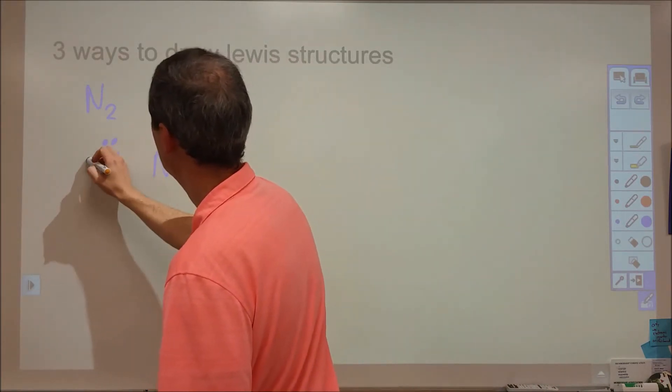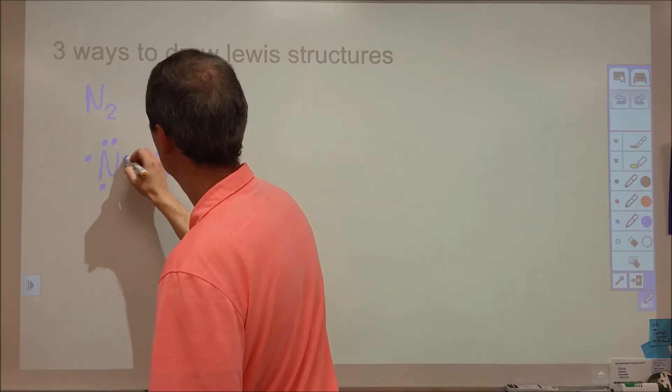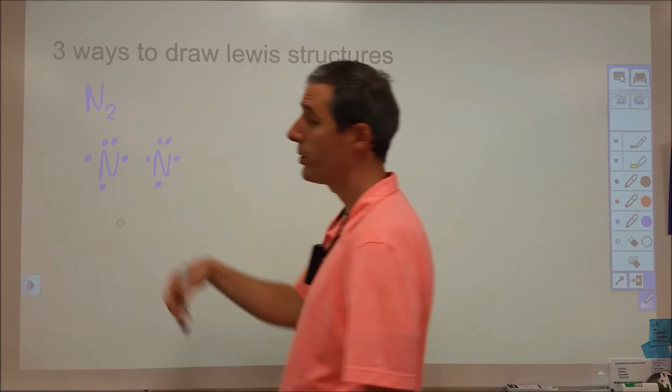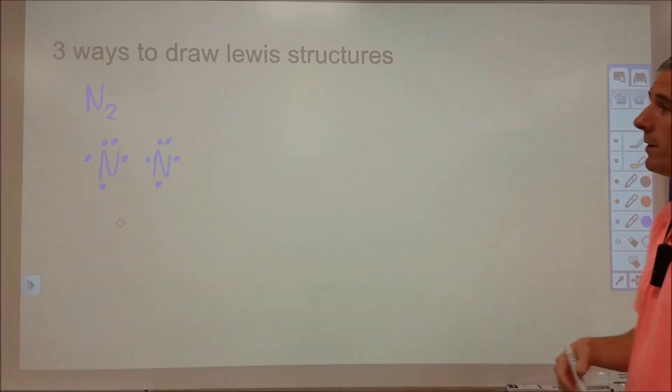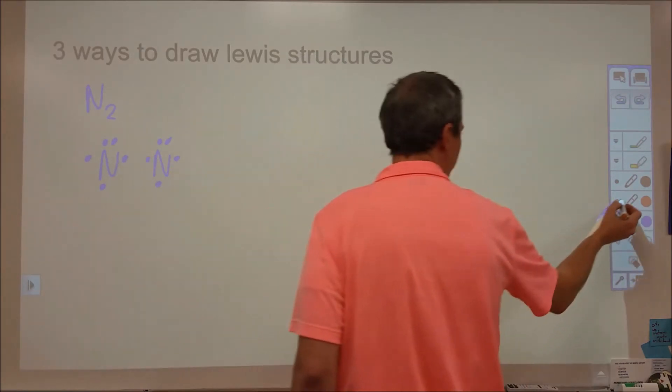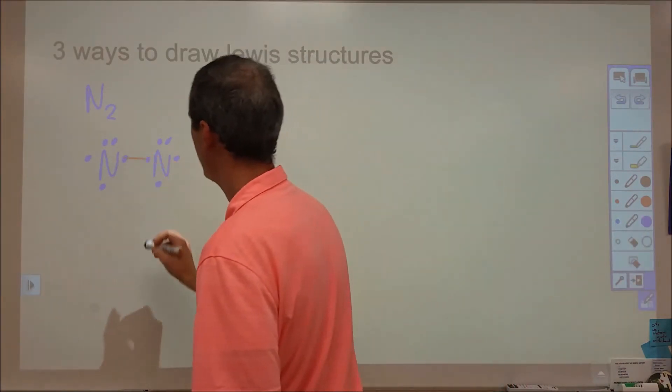So nitrogen is in the 15th column, which means it's going to have five valence electrons, or 2s2, 2p3 for its five valence electrons. What we're going to do is we're going to start to share these until we end up with eight. We're going to start by taking these two, forming a bond there.